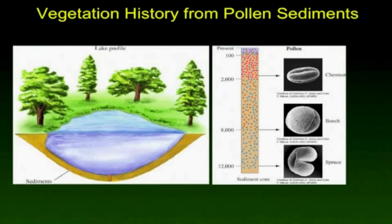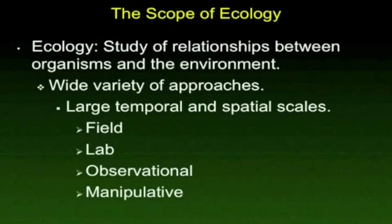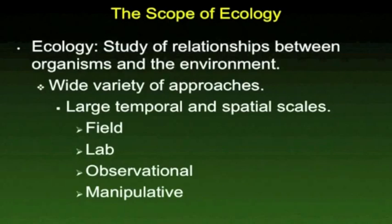Similar research is being done in Antarctica, where they're taking cores of the ice sheet and looking at the concentration of carbon dioxide in air bubbles trapped in the ice. This allows researchers to get some idea of what the atmosphere was like many thousands of years ago.